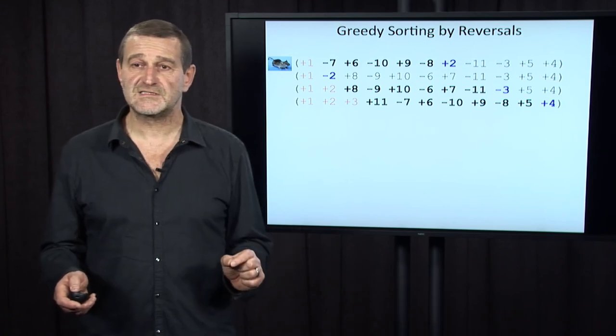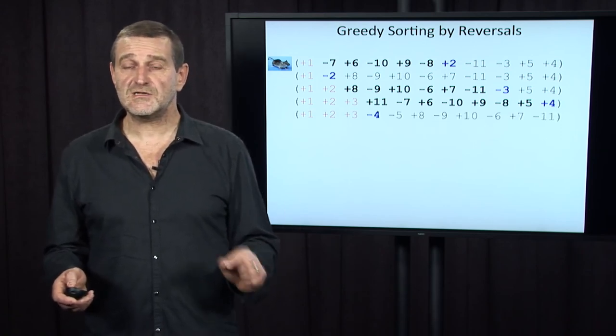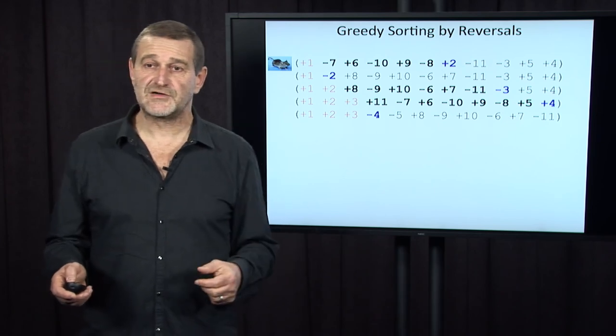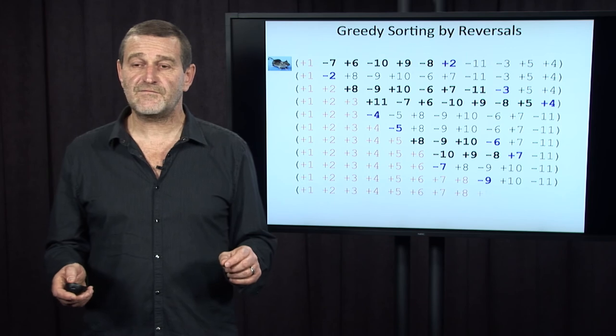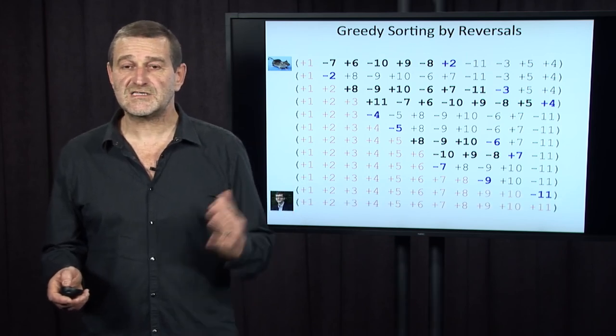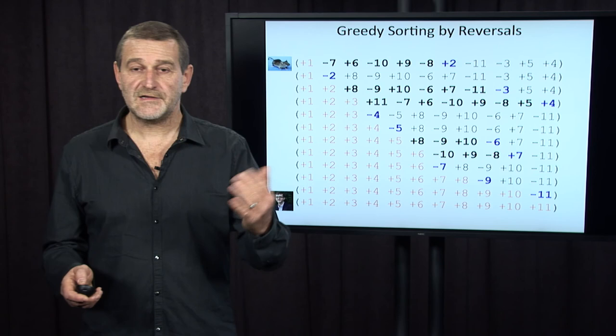Now, let's take care of plus four. Once again, let's find a reversal that brings it to the right position. It now has a wrong sign, but we will revert it. And we will continue doing this until we finally, using this greedy algorithm, transform mouse into human.